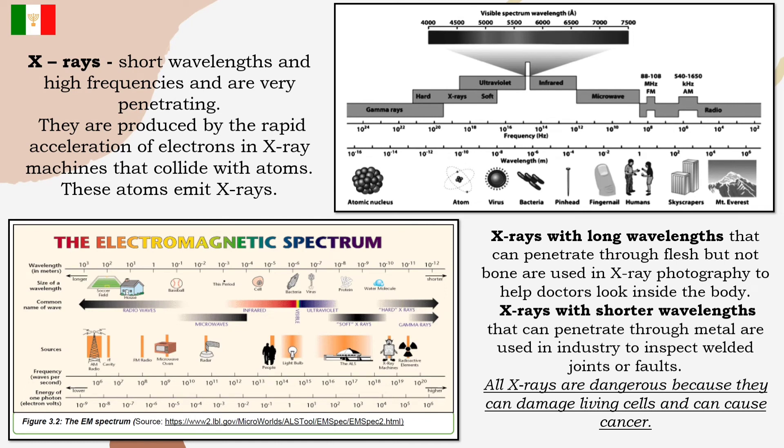X-rays, having a short wavelength and high frequencies, and are very penetrating. They are produced by the rapid acceleration of electrons in x-ray machines that collide with atoms, and these atoms emit x-rays. X-rays with long wavelengths that can penetrate through flesh but not bone are used in x-ray photography, to help doctors look inside the body. X-rays with shorter wavelengths that can penetrate through metal are used in industry to inspect welded joints or faults. Take note, they are shorter in wavelength than UV rays and longer than gamma rays.